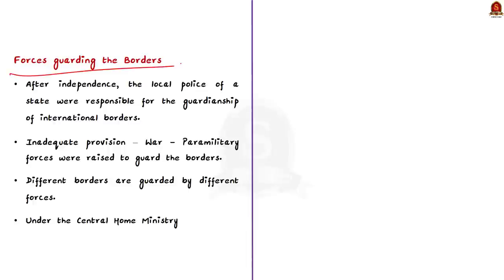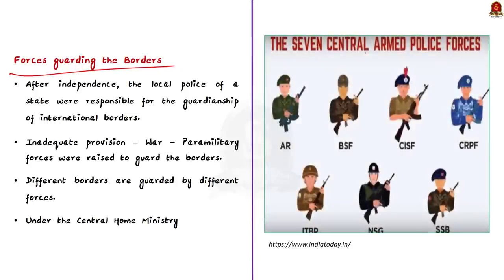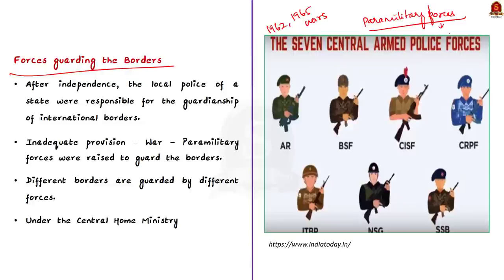After independence, the local police of each state were responsible for the guardianship of international borders. However, this proved inadequate during the 1962 and 1965 wars. So paramilitary forces were raised to guard the borders. Different borders are guarded by different forces — these paramilitary forces are not part of the army and are under the central home ministry, though they are assisted by the army in their duty.